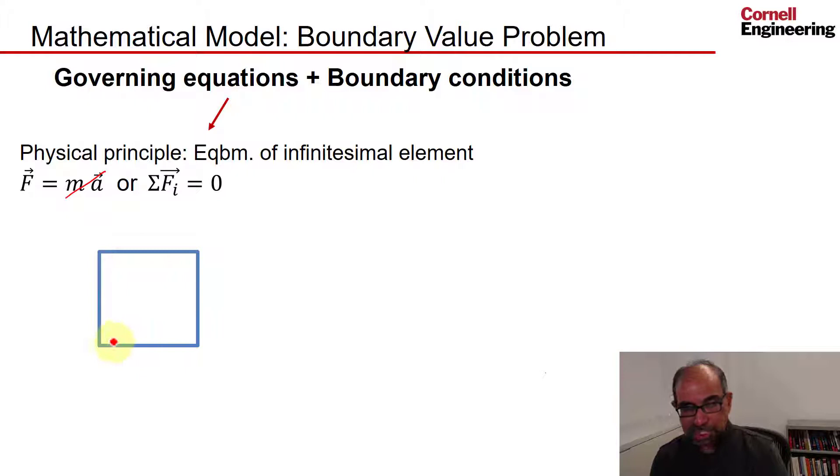Here's a two-dimensional view of our vanishingly small chunk. On the left face, that's our normal stress. On the right face, the normal stress is slightly different, and that difference is proportional to the gradient of sigma x in the x direction.